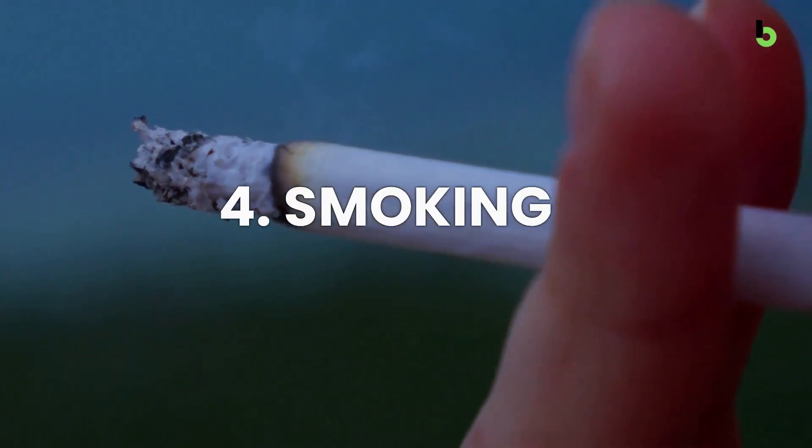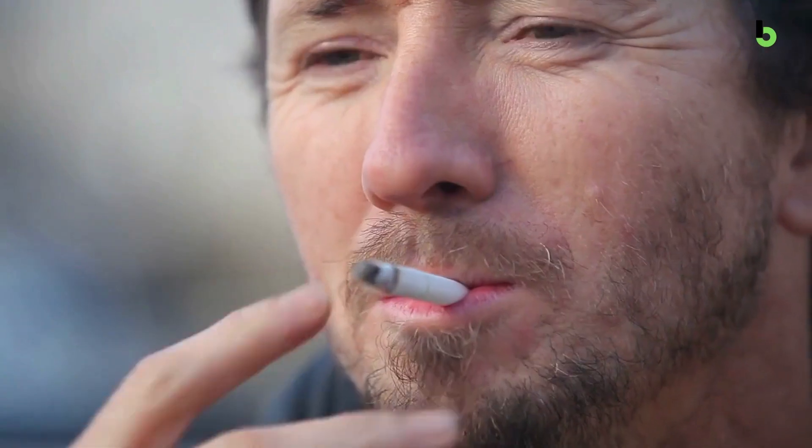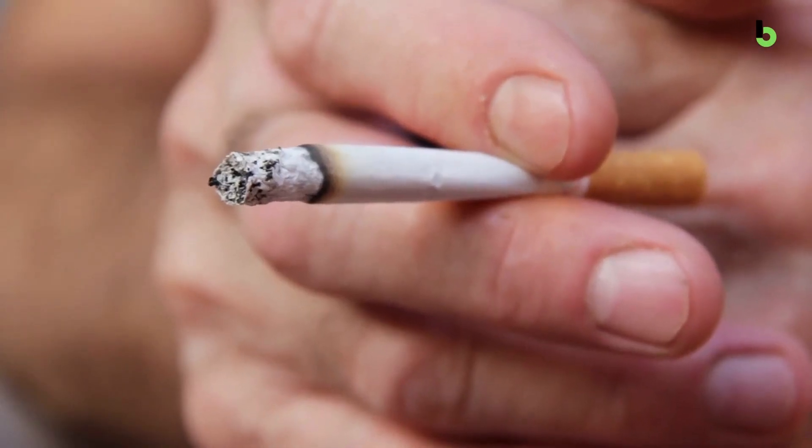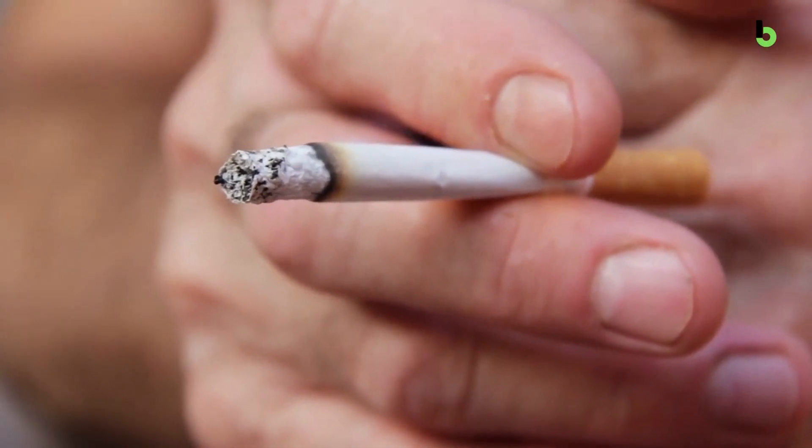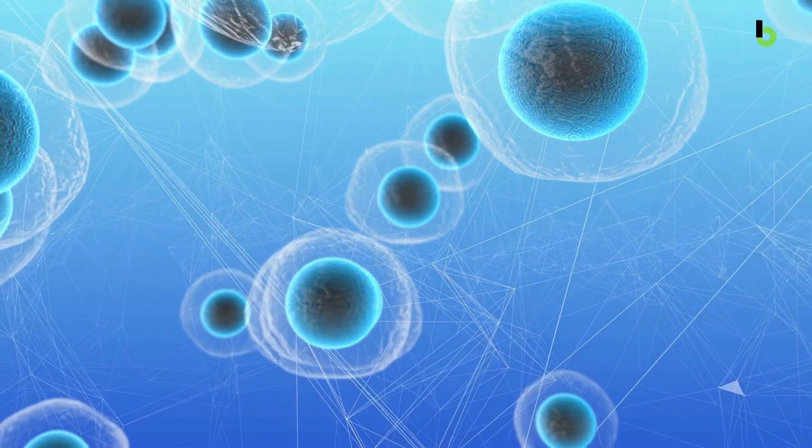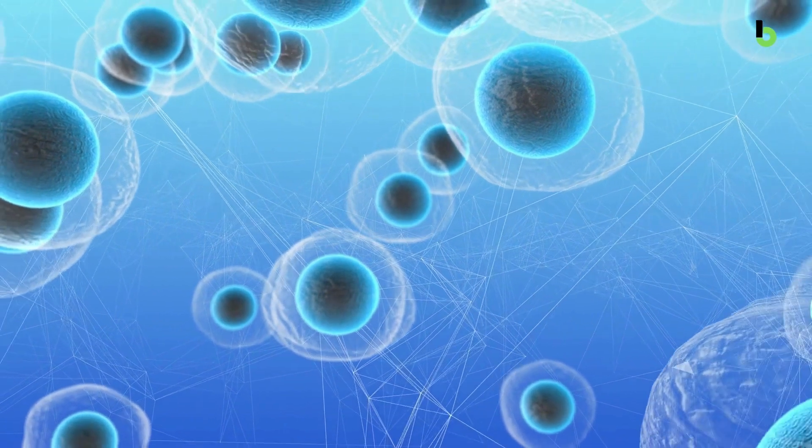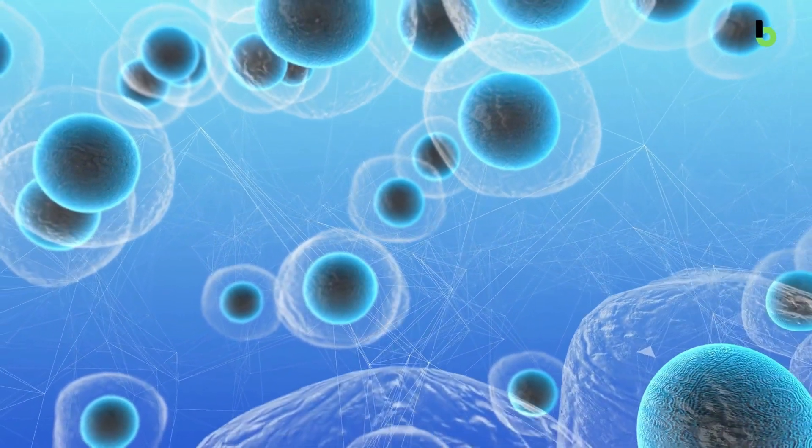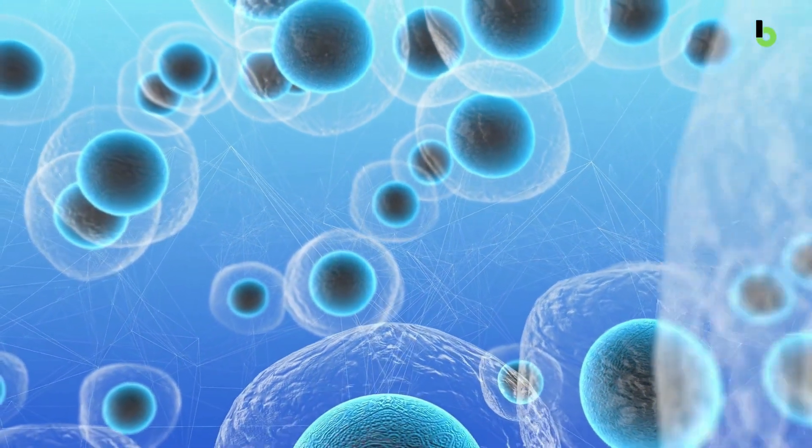Number 4: Smoking. Smoking can be harmful to the kidneys because it can damage the blood vessels in the kidneys and reduce their ability to function. Over time, this can reduce blood flow to the kidneys, which can impair their ability to filter waste and maintain fluid balance. Smoking can increase the risk of kidney cancer, because smoking can damage the DNA in cells, which can cause them to grow and divide uncontrollably.